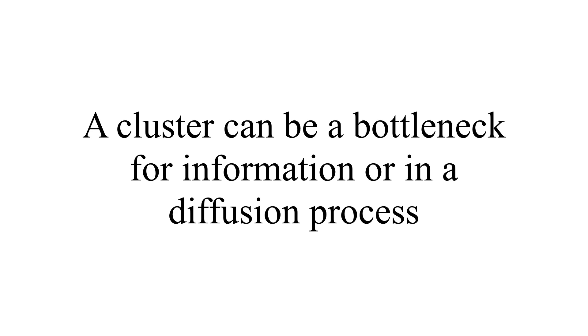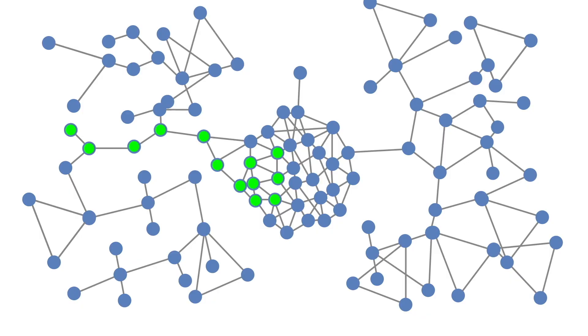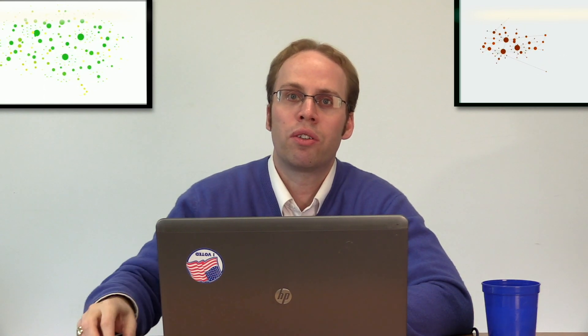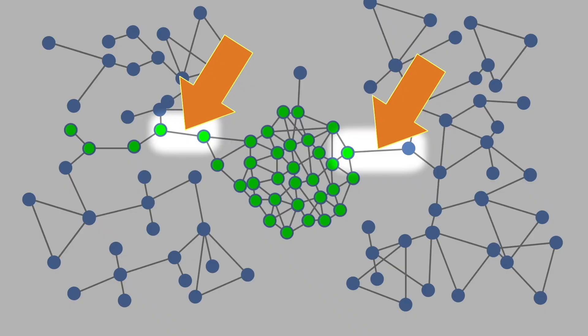Clusters can be really important for several reasons. Distinct clusters can be bottlenecks of information or bottlenecks in a diffusion process. Imagine if there's a disease spreading in a network that's not evenly connected and we have these clusters. The disease might come into the cluster, do lots of damage, lots of people get sick, but it might not spread much further if the cluster is only tied very loosely to the rest of the network — only one or two ties to the main component. So that disease might play out in that cluster and not have any other effect. It might be devastating for the cluster but not for everyone else.